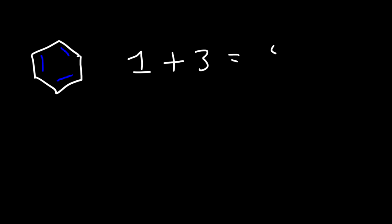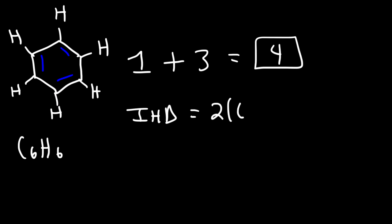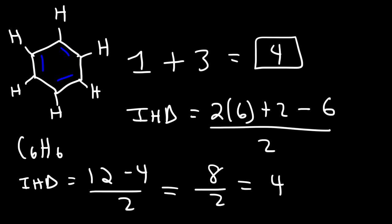What about the benzene ring? Benzene has one ring and three double bonds, so the IHD is 4. Each carbon is attached to one hydrogen, giving the molecular formula C6H6. Calculating: (2×6 + 2 − 6) / 2 = (12 + 2 − 6) / 2 = 8/2 = 4. This confirms the IHD is 4.